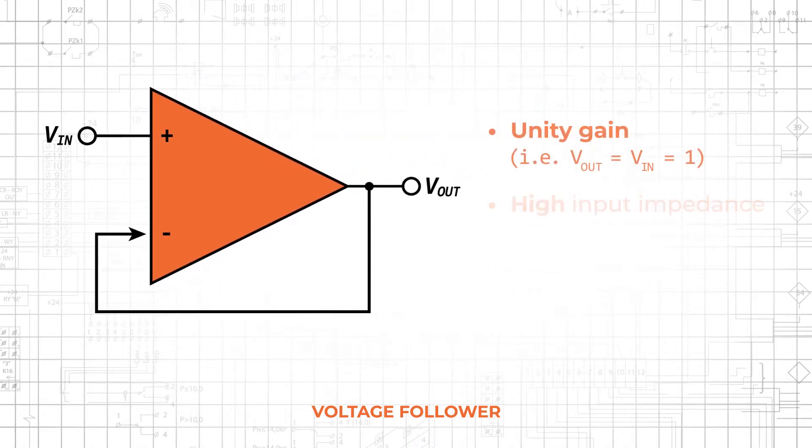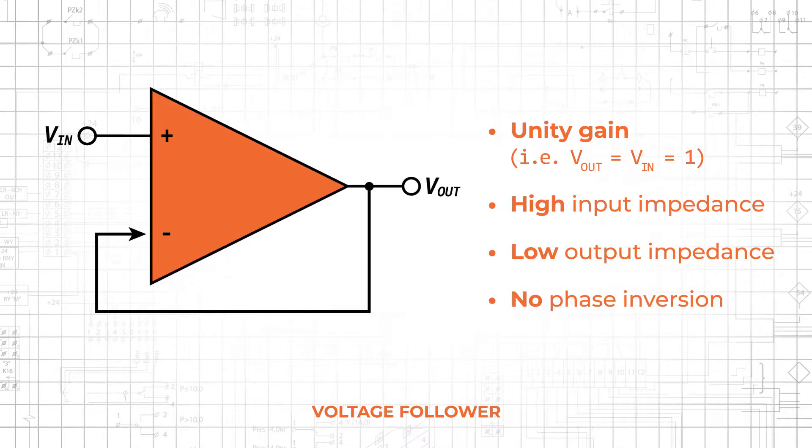An op-amp makes an excellent buffer because it provides very high input impedance and very low output impedance. The high input impedance makes the voltage follower compatible with a variety of source circuits, and the low output impedance makes it compatible with a variety of load circuits.